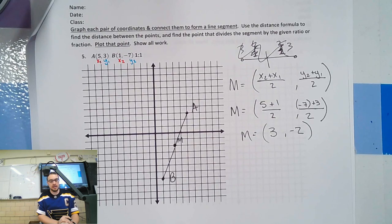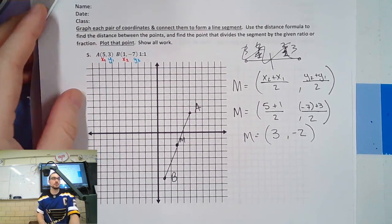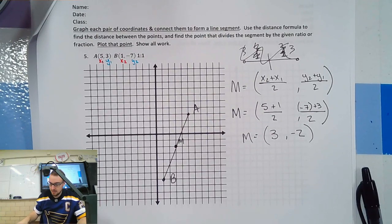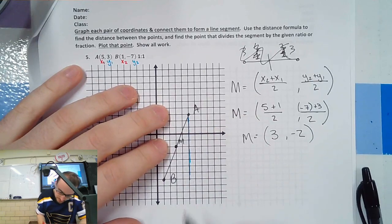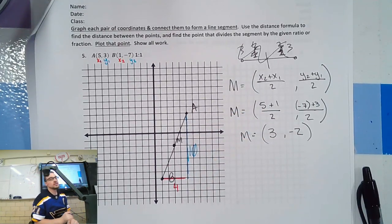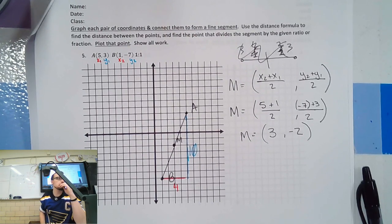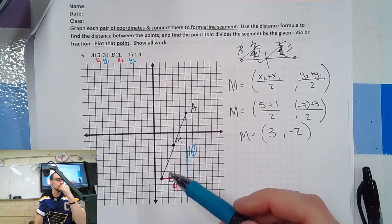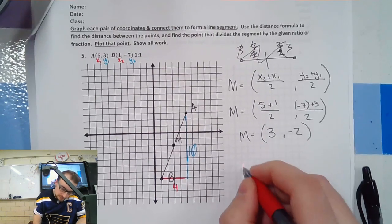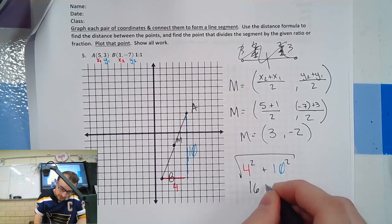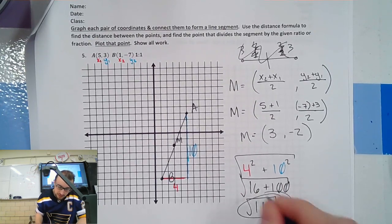To find the distance of that line we can use the distance formula or we can check our work using the Pythagorean theorem. If we make this into a right triangle — four down and ten across — we can square both, add them, and root them to find the distance. So: four squared plus ten squared equals sixteen plus one hundred, rooted, which is the square root of one hundred sixteen. That's the distance.